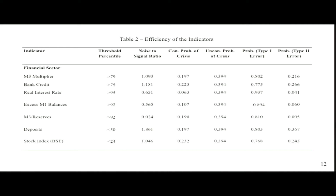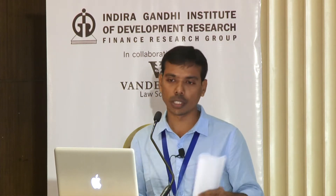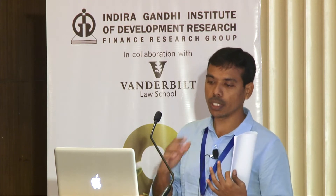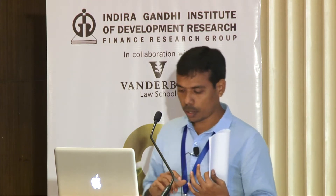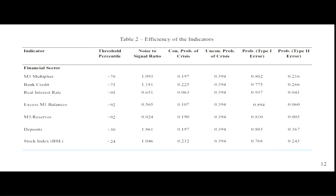Depending on whether an increase or decrease in a variable is assumed to cause a crisis, we take the upper or lower percentile tile respectively. The threshold percentile is selected where the noise-to-signal ratio is minimized. We find that Type I errors are quite prevalent. We also calculated average lead time, since some variables may signal just before the crisis rather than well in advance within the 12-month crisis horizon.